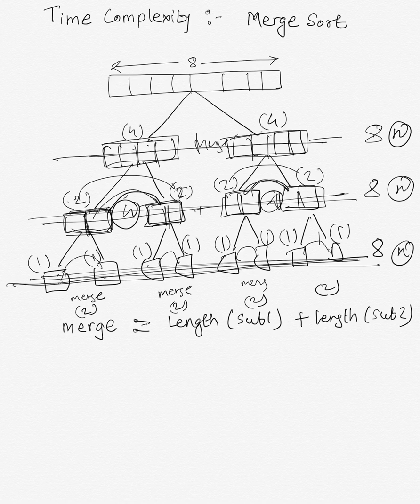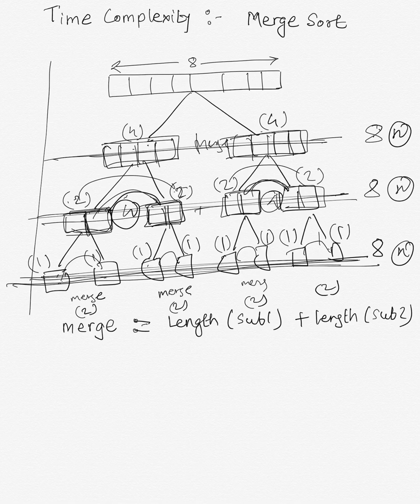In merge sort, we are dividing the given input array into two equal halves at every iteration recursively. This means the recursive tree that is generated is a balanced binary tree. In a balanced binary tree, the height of the tree — that is, the number of levels — is always log n. So the height of this recursive tree is log n.